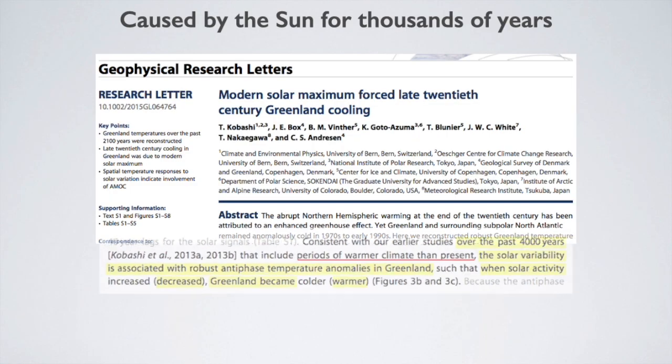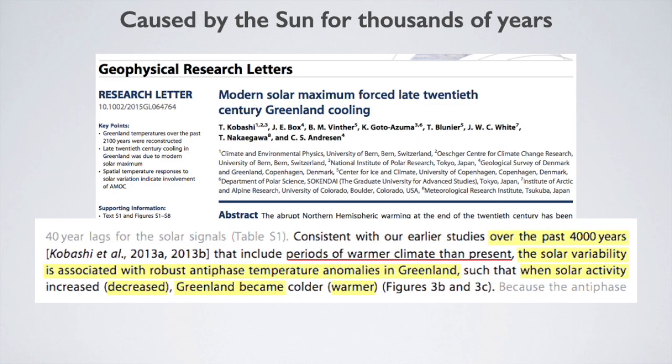How do we know that the change in solar activity caused the change in transport and the warming of the Arctic? Because it has been doing so for thousands of years. This study by leading scientists looked at the relationship between solar activity and Greenland's temperature and found that over the past 4,000 years, solar activity has been inversely correlated with Greenland's temperature. When solar activity decreased, Greenland warmed, as it is doing now. It also says that there had been periods in those 4,000 years when Greenland was warmer than it is now, which is inconsistent with warming being caused by our emissions.